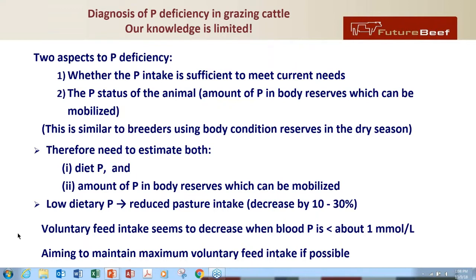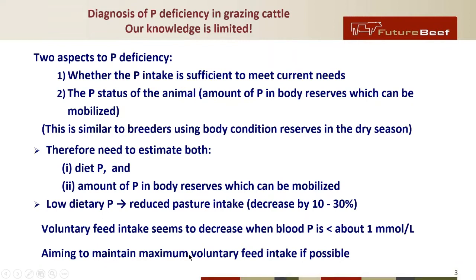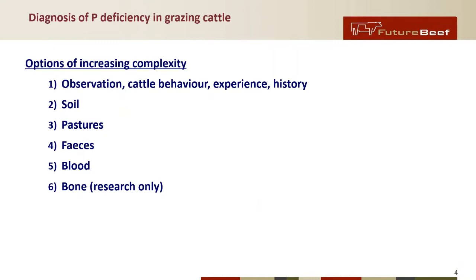Voluntary feed intake seems to decrease when blood P levels fall below about one millimole per litre. So our first priority with P supplementation is aiming to maintain maximum voluntary feed intake if possible. Often we can't do much about the fact that we're dealing with a relatively low quality diet because of the nature of P deficient soils, but if we can at least get them to eat their potential feed intake, we're going to be on a path to getting the best possible performance from them.